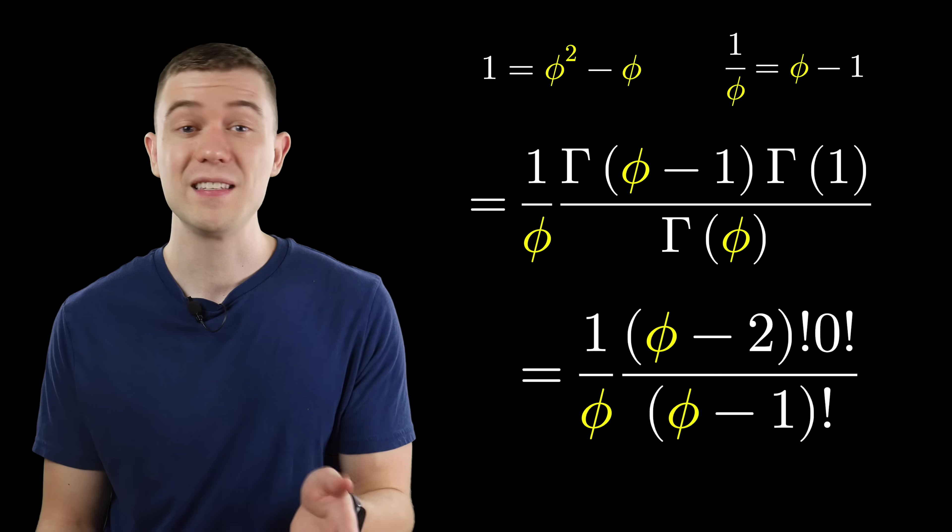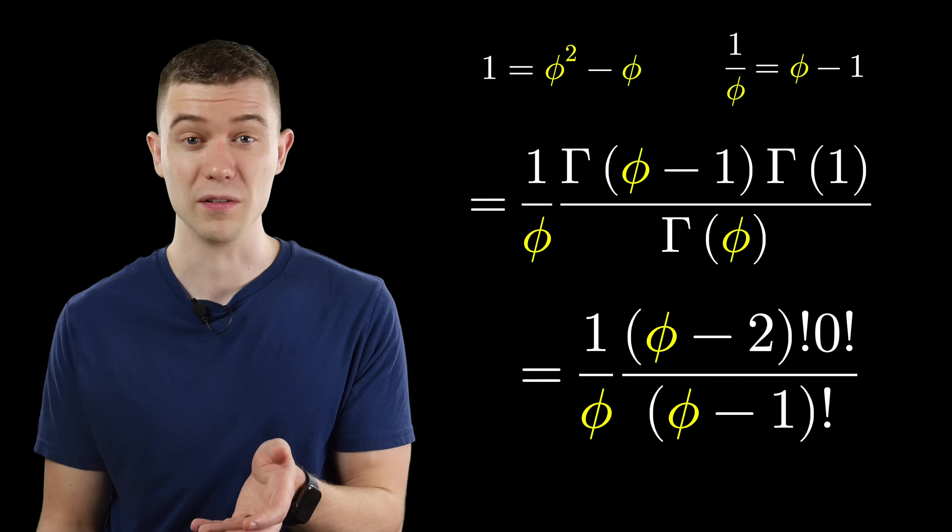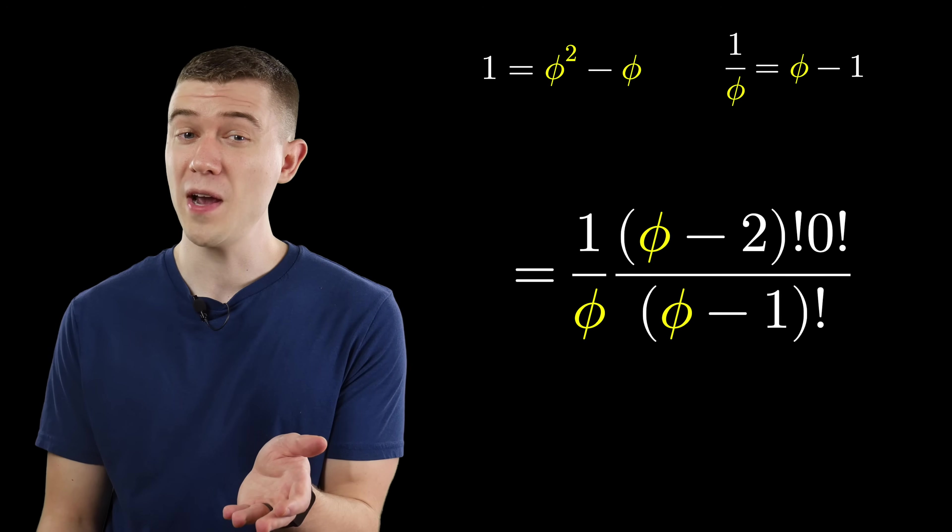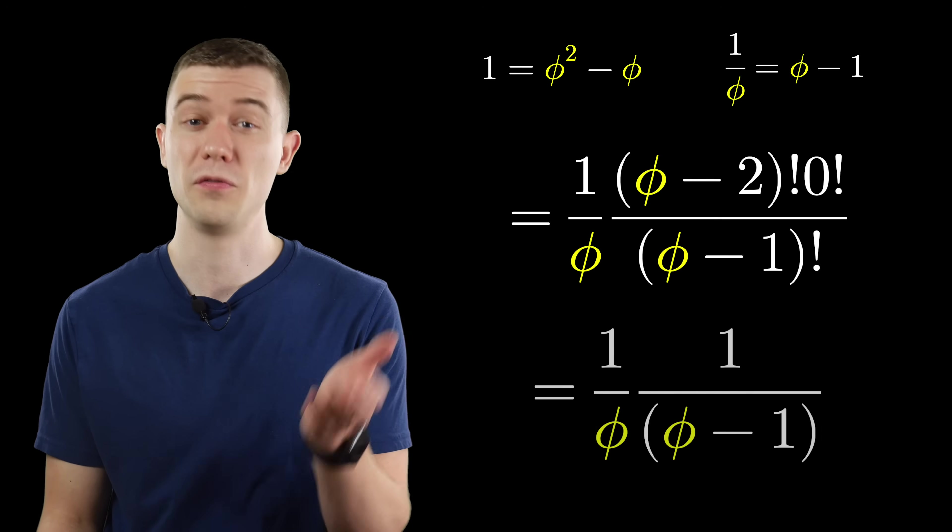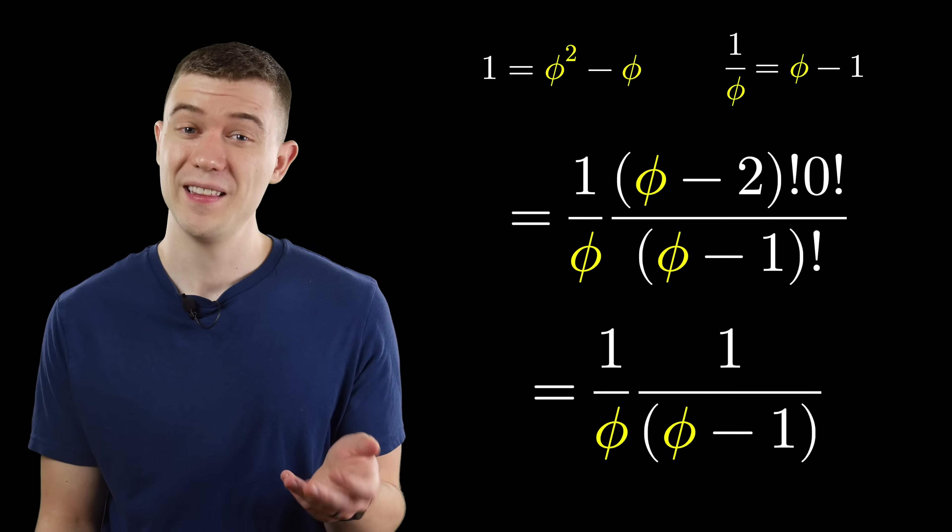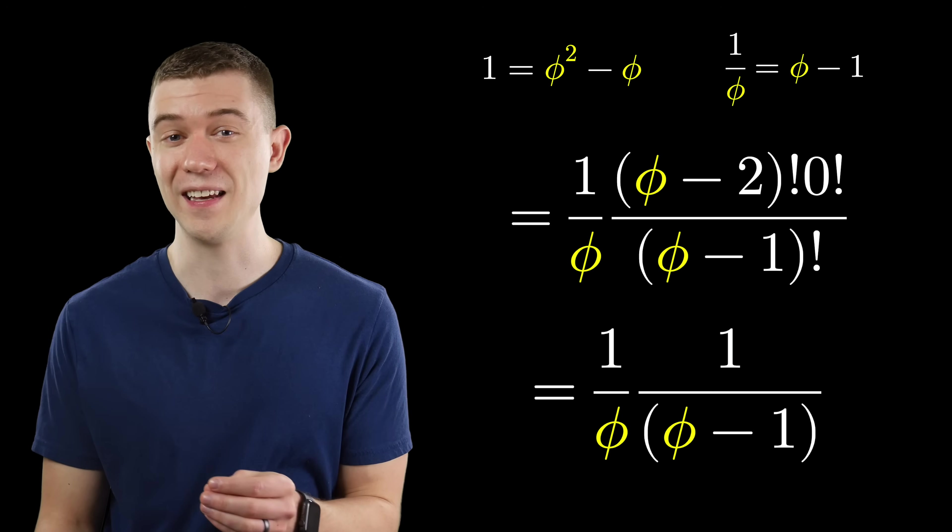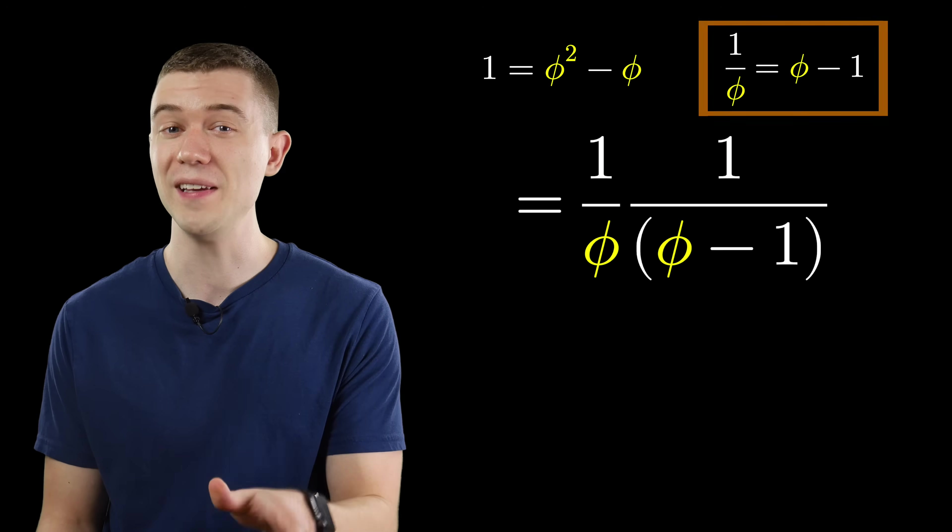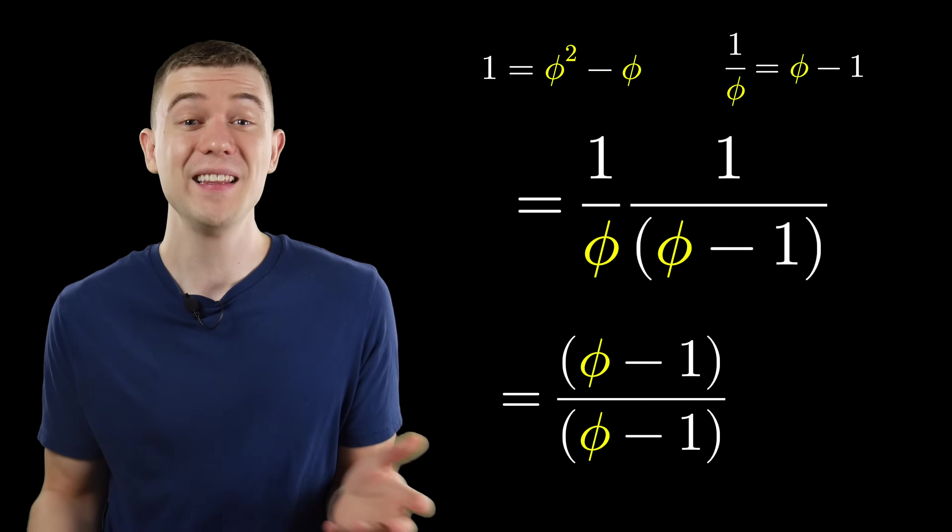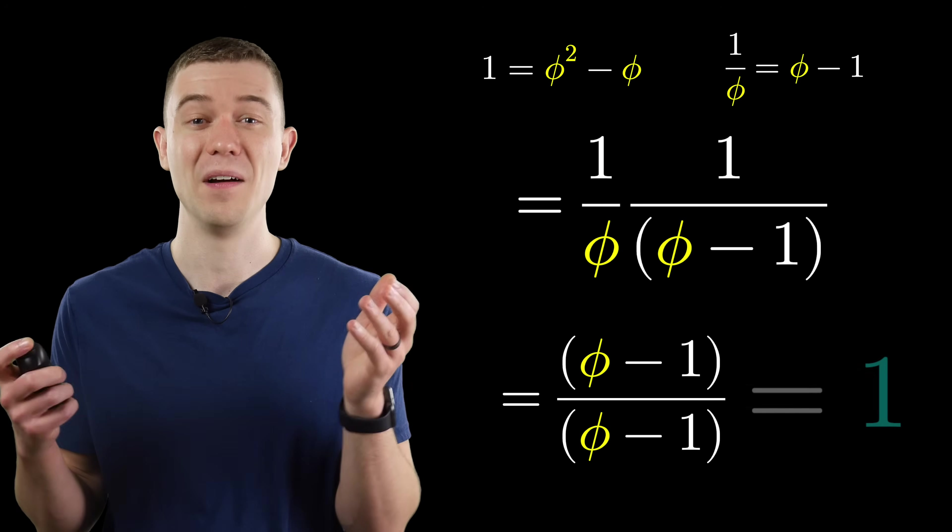We can simplify this using properties of factorials. Phi minus 2 factorial over phi minus 1 factorial cancels to 1 over phi minus 1. This solution is pretty elegant because one more time, remember 1 over phi is phi minus 1. These cancel out and we get 1.